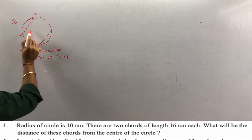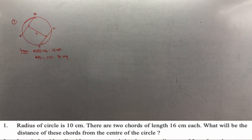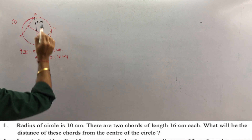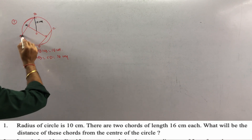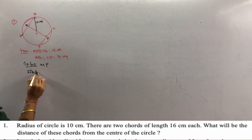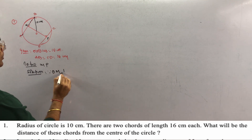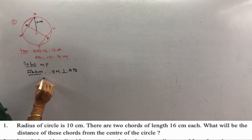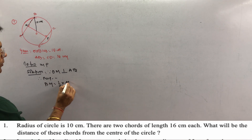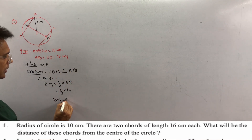We need to find the perpendicular distance. Joining the center, the radius OB equals 10. Since OM is perpendicular to AB, and the perpendicular drawn from the center of the circle to the chord bisects the chord, we say BM is equal to half of AB. AB is 16, so BM equals 8 centimeters.